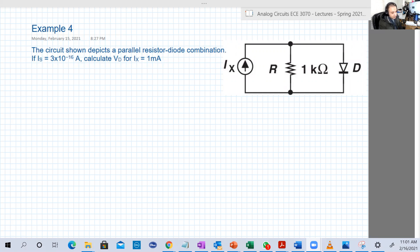Here is another example. We have a diode in parallel with a resistor. The resistor is one kilo ohm and the diode has a saturation current of three times 10 to the power minus 16 amperes. I selected this example to show you that we can also use current sources and train you on circuits with current sources.